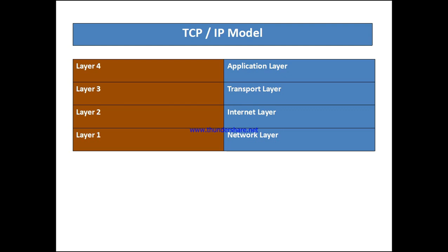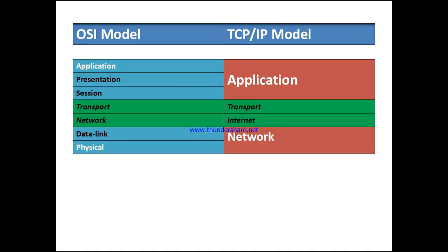In the OSI model, the top layers are the application layer, presentation layer, and session layer. These three layers combine into the TCP/IP application layer. Next is the transport layer at layer 4, then the internet layer, which corresponds to the OSI network layer, and finally the data link and physical layer for connectivity.